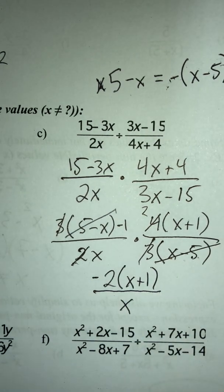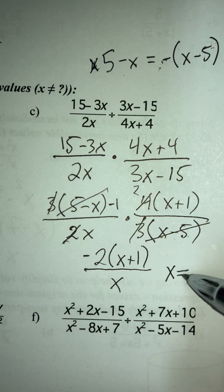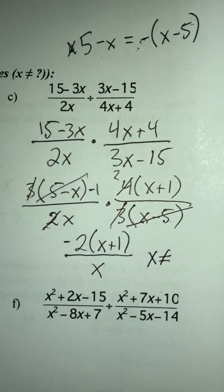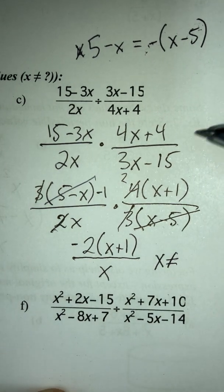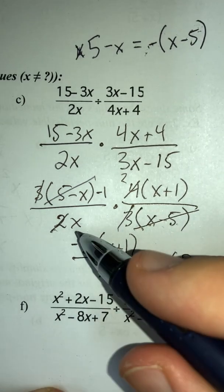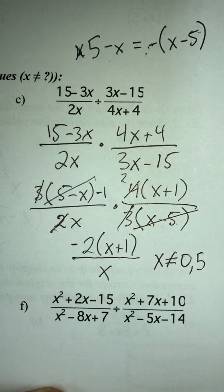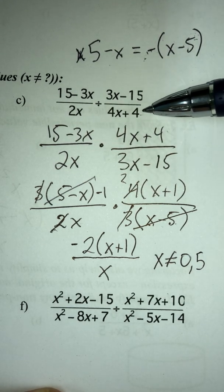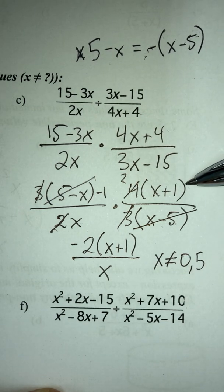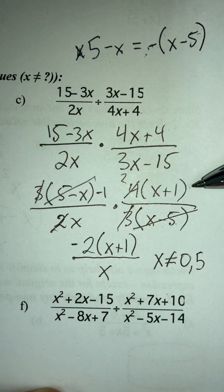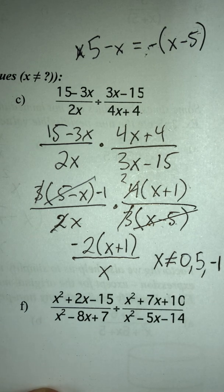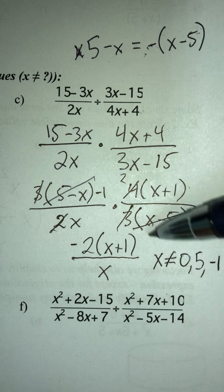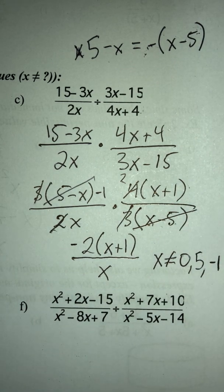For restrictions on this division problem, I need to look at any point where the denominator cannot equal zero. From the factored form: x cannot equal zero, and x cannot equal 5. Also, because (4x + 4) was originally in the denominator before I flipped it, x cannot equal negative 1 as well. Anything that's in the denominator at any point cannot equal zero.